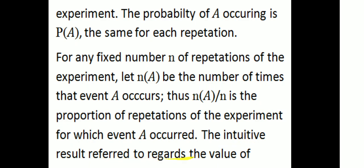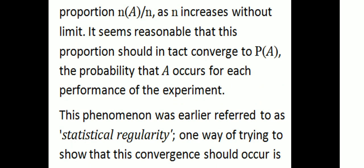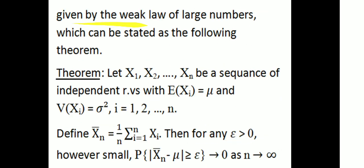The intuitive result regards the value of the proportion N(A)/N as N increases without limit. It seems reasonable that this proportion should converge to P(A), the probability that A occurs for each performance of the experiment. This phenomenon was earlier referred to as statistical regularity. One way of showing that this convergence should occur is given by the Weak Law of Large Numbers.